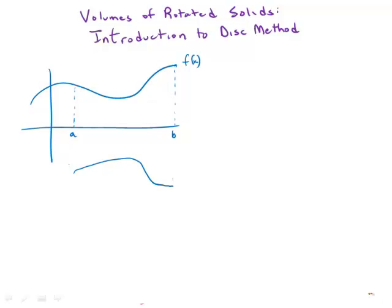So we're now going to focus in on one particular kind of volume, one particular kind of shape. These will be volumes of what are called rotated solids. The basic idea is that we have a function f of x and we rotate it around an axis.